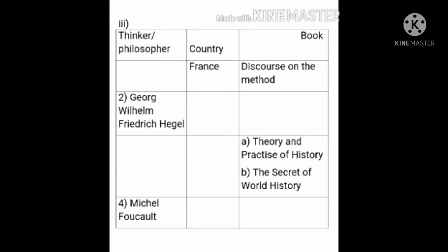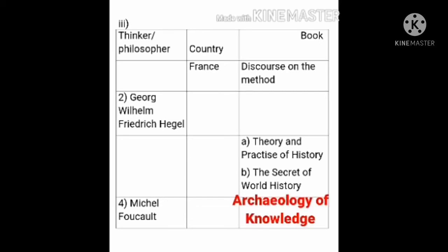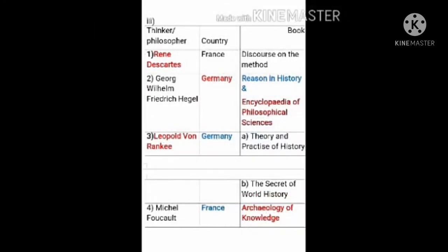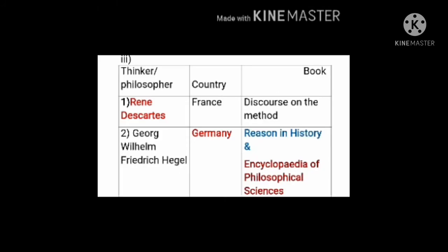In the fourth row, the philosopher's name given is Michel Foucault. Michel Foucault belongs to France and he wrote the book Archaeology of Knowledge. Now students, note down the answers of the complete table.